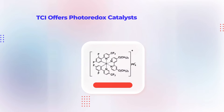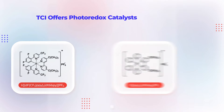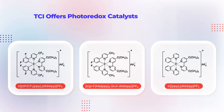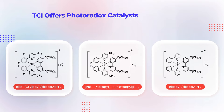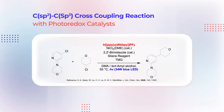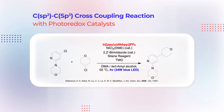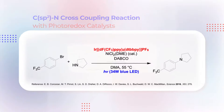TCI offers iridium complex photoredox catalysts for C(sp2)–C(sp3) cross-coupling reactions and C–N cross-coupling reactions. Here is an example of a C(sp2)–C(sp3) cross-coupling reaction using photoredox catalysts.